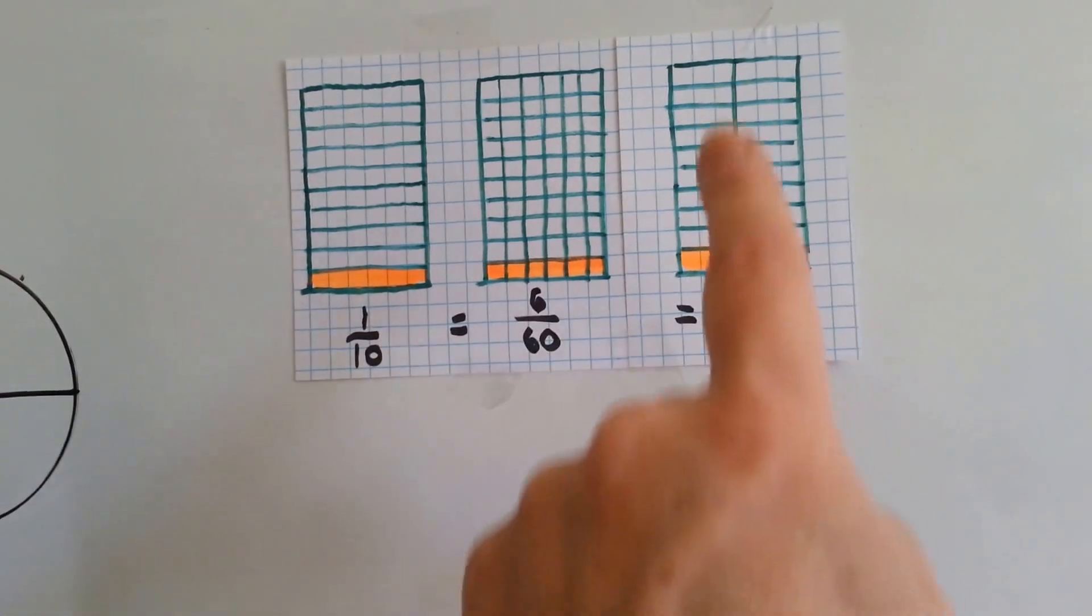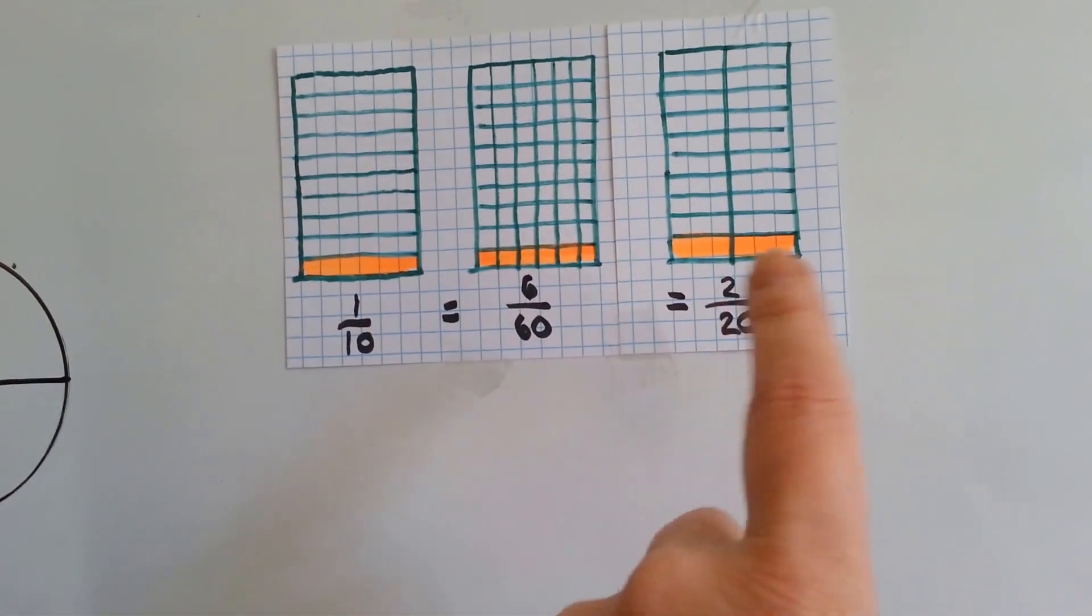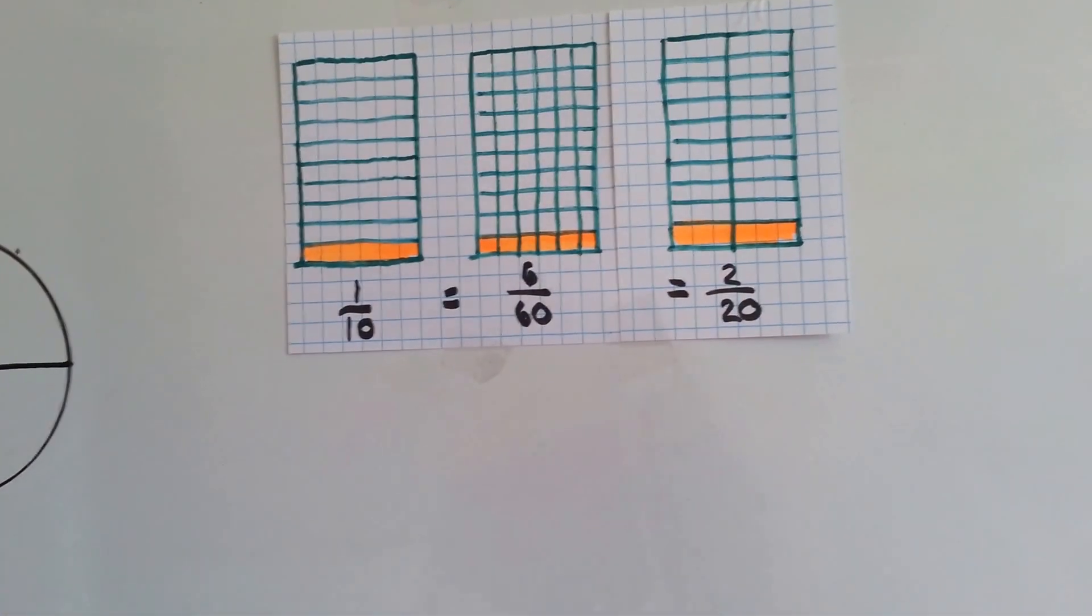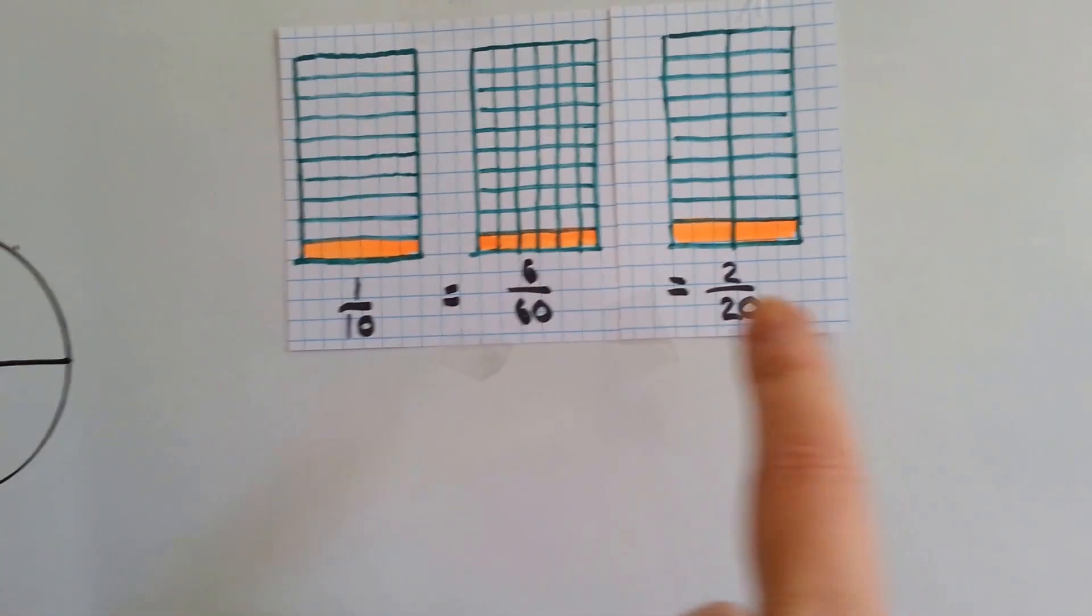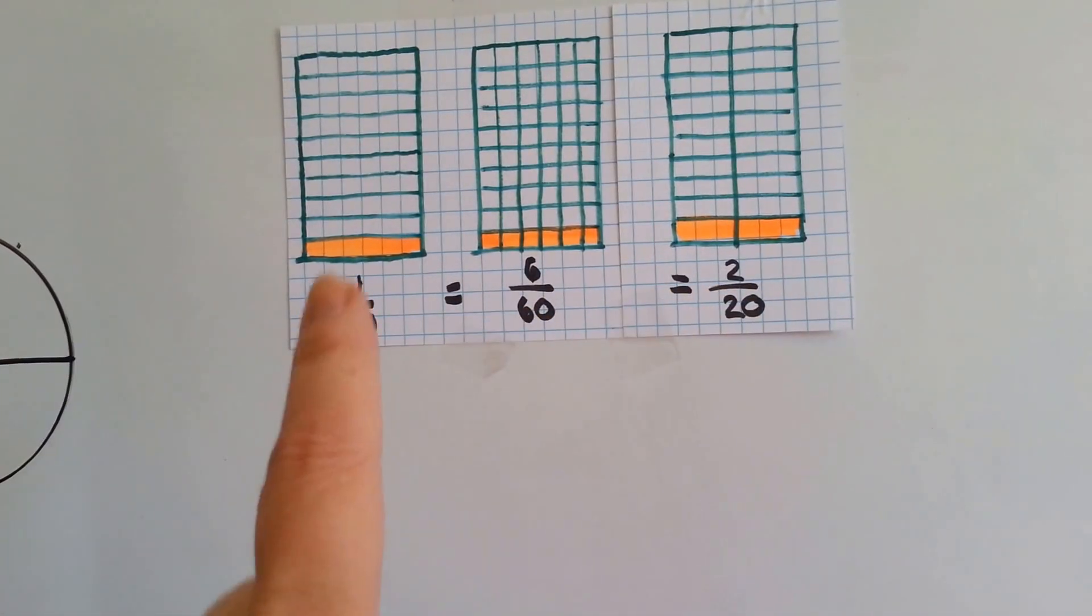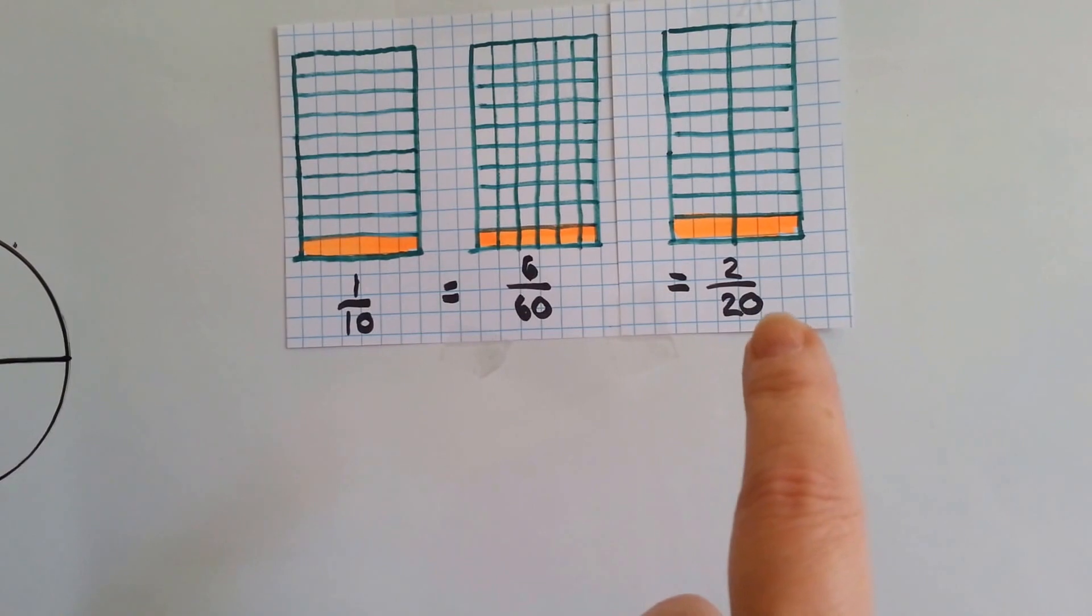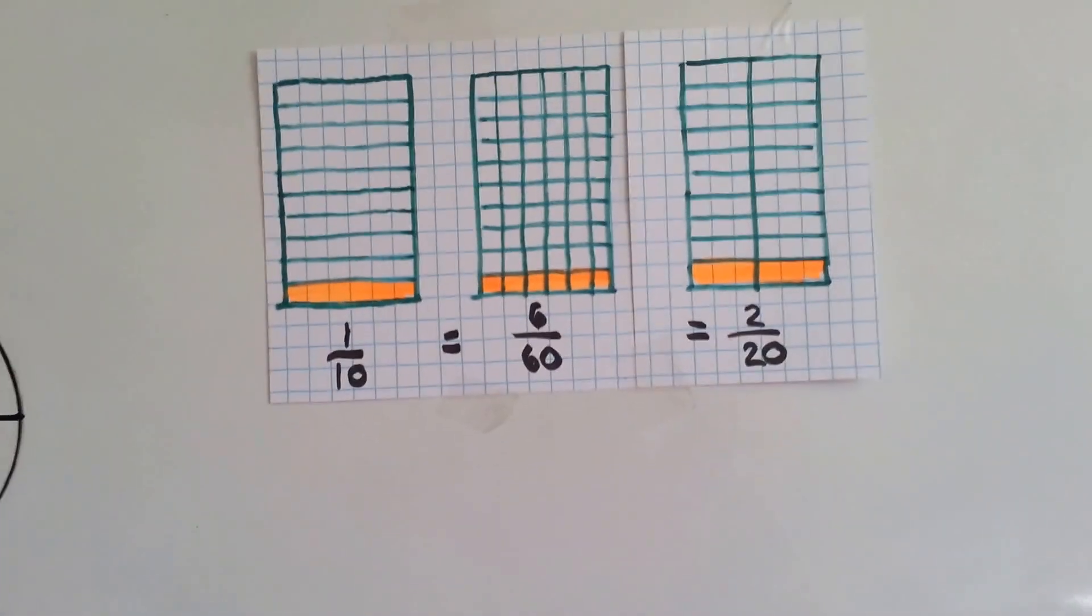Now, if I split it into twenty pieces, and I color in two, they're still equal. These are all equivalent fractions. One tenth is the same thing as two twentieths. It's the same thing as six sixtieths.